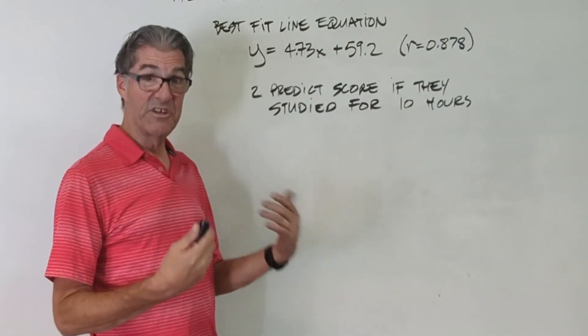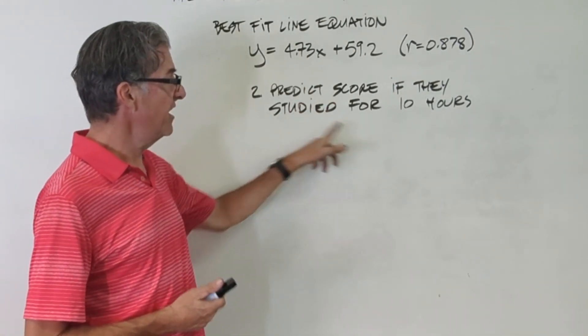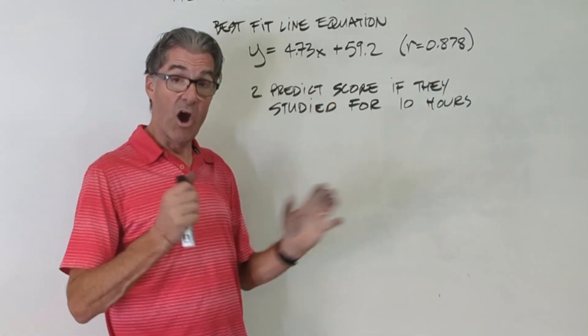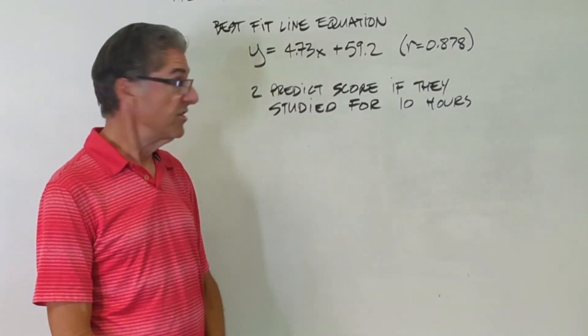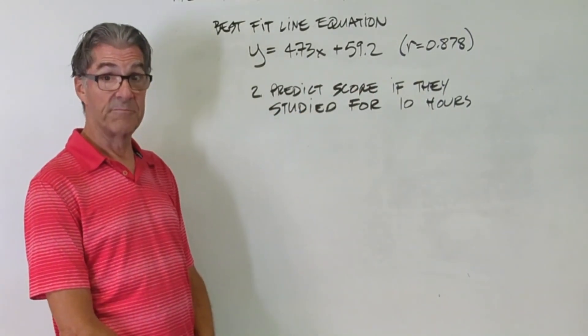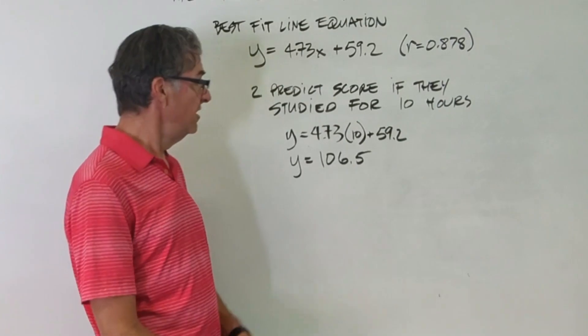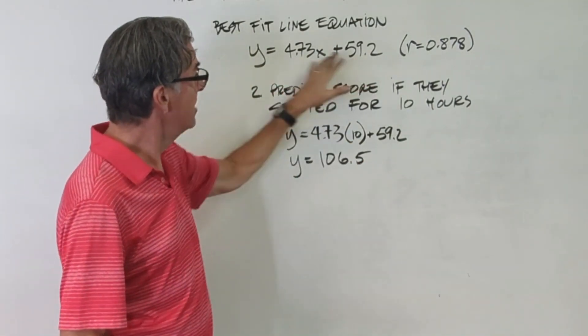All right, here's another prediction for you to make. Predict the score if they studied for 10 hours. So we are doing the right thing. We're using the x value to predict the y value. So go ahead and use this information and your equation and predict their score. Okay, let's see how you did. So this is straightforward. I just took my 10 hours. I plugged it into my equation, did my math, and I got 106.5%.